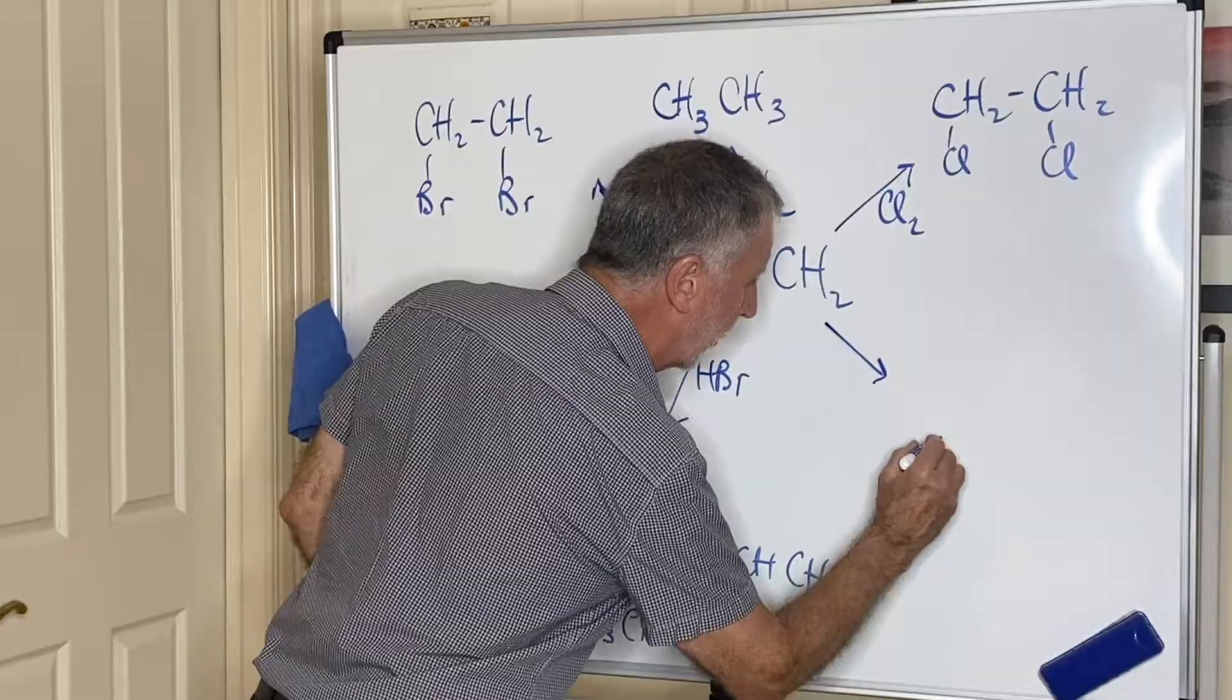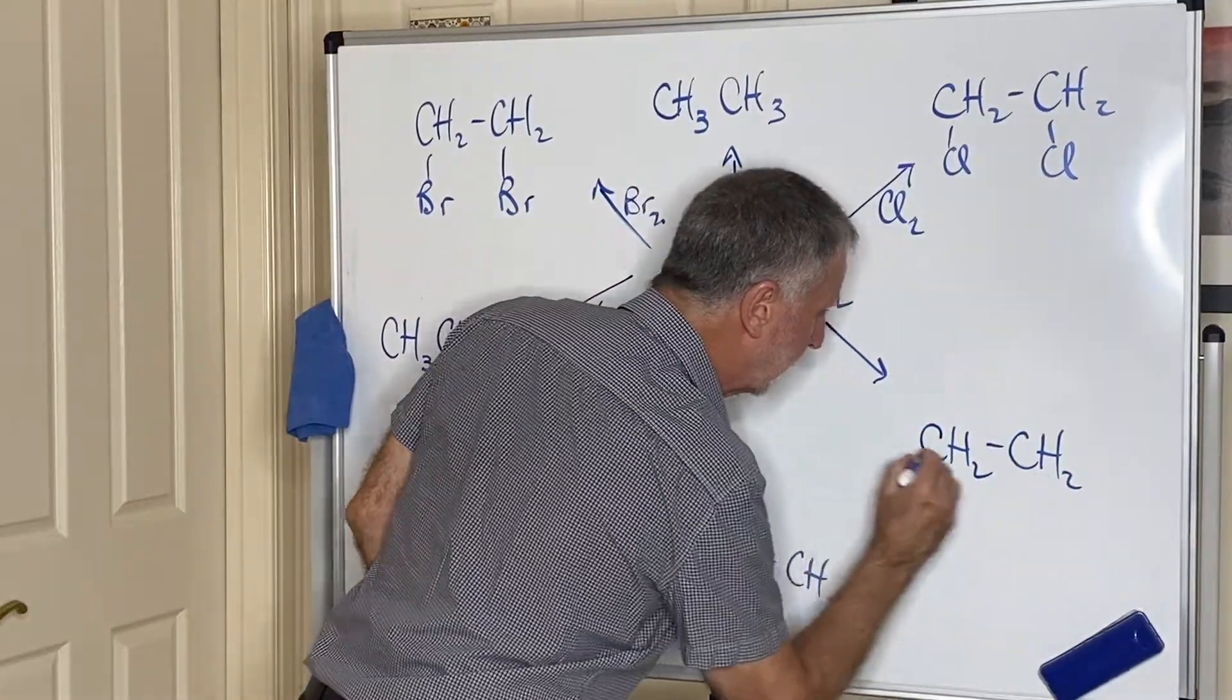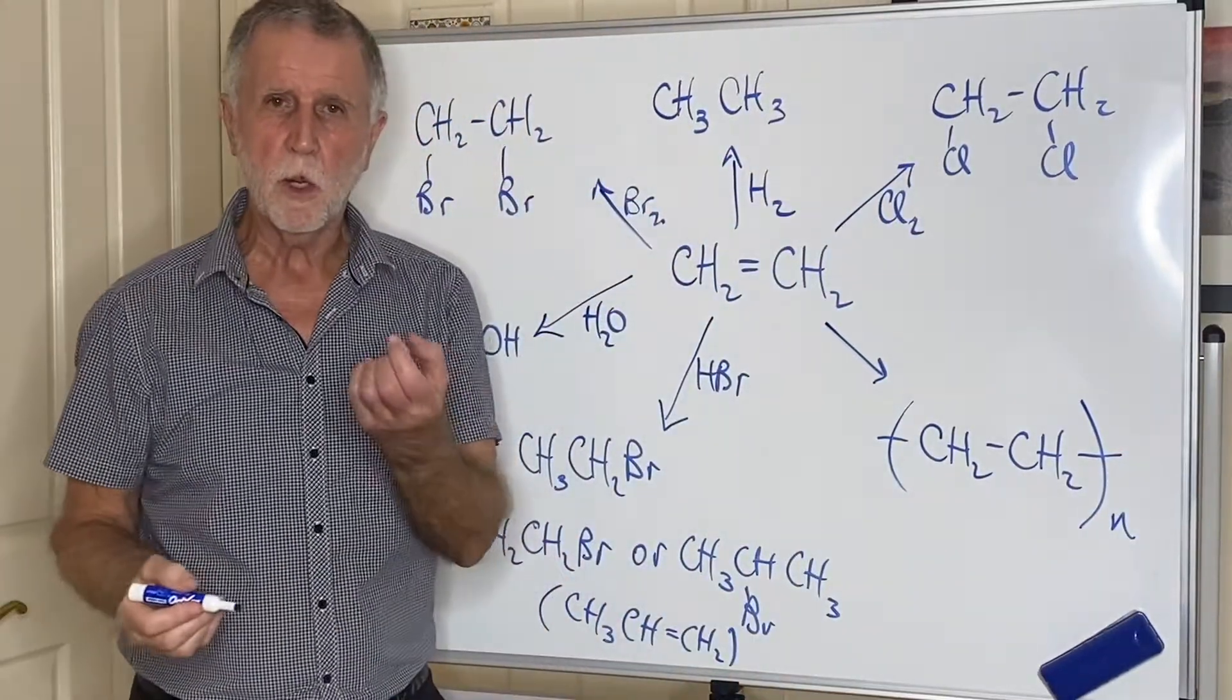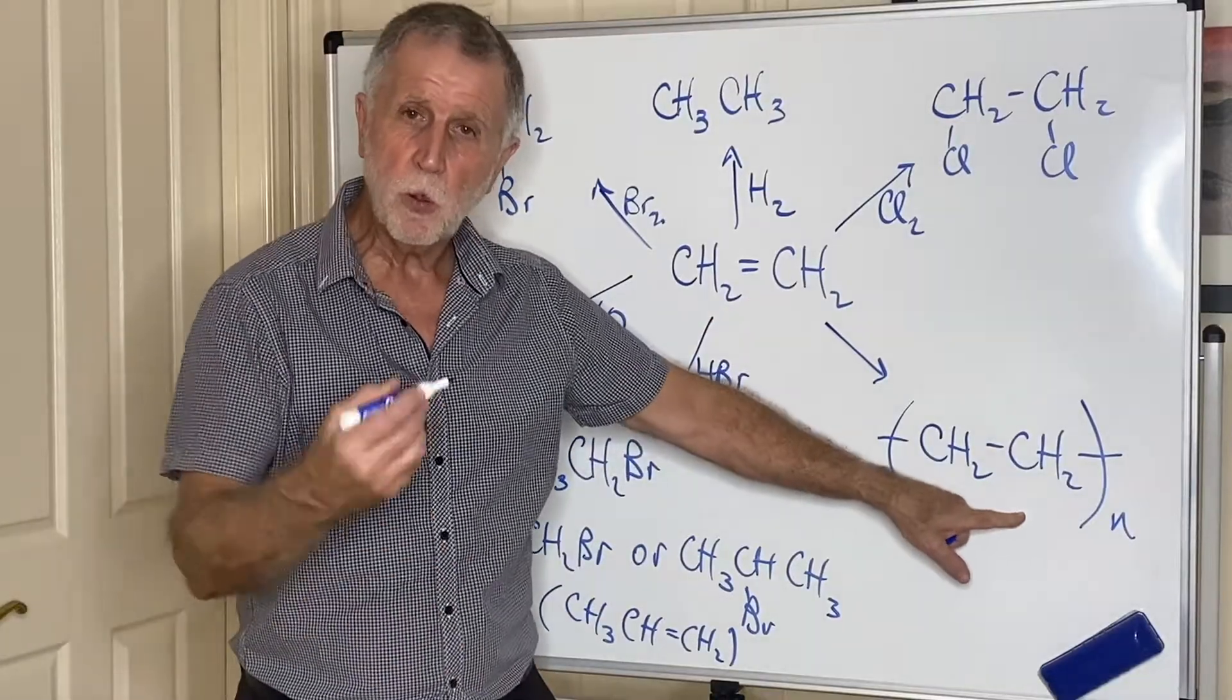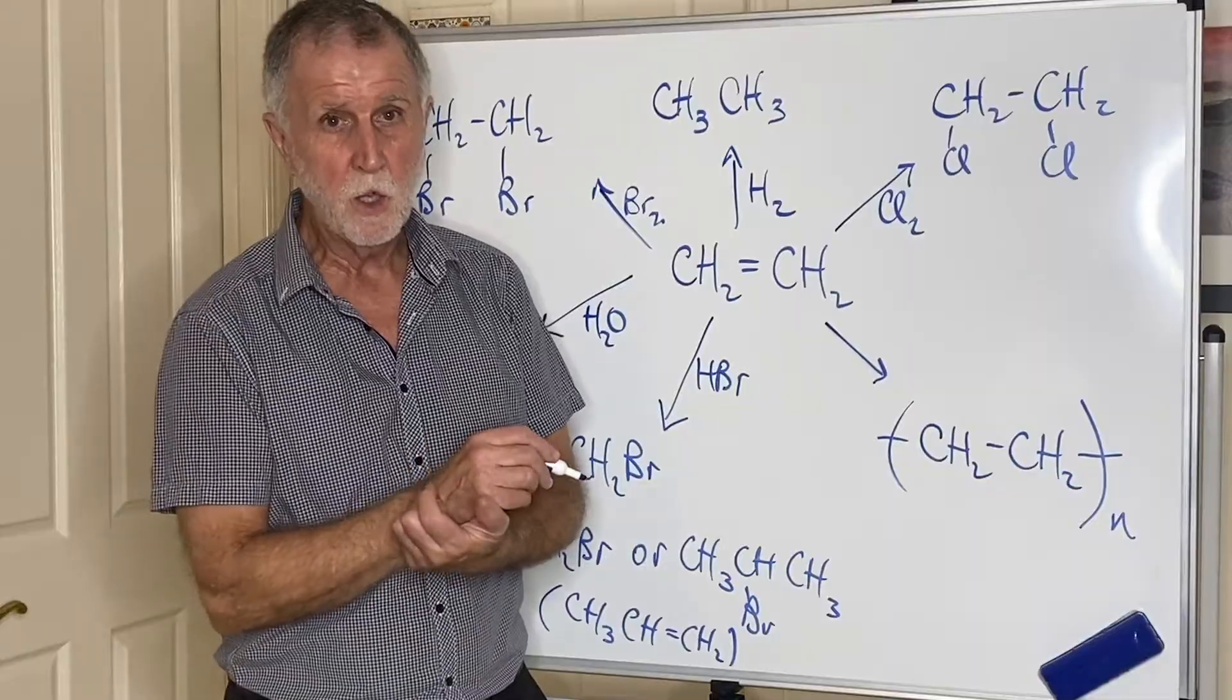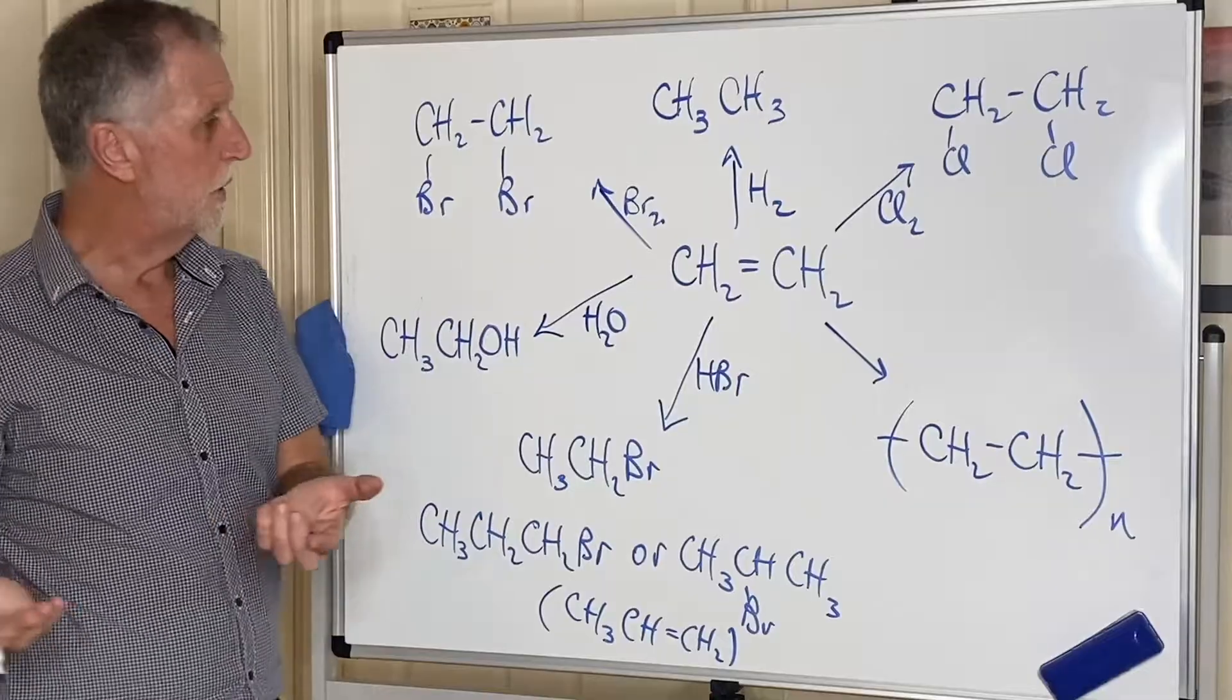And then the final reaction of the alkenes is again something we'll be dealing with a little bit more later, where we break the double bond and we create a chain which we call a polymer. If this is ethene, then the polymer will be polyethene or polythene, which we use to make plastic bags out of. Now that is alkene chemistry. You'll see there's quite a bit of chemistry there.